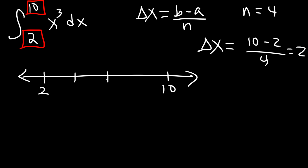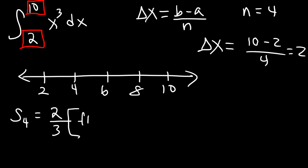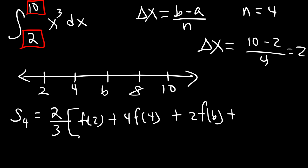Because n is 4, there are four sub-intervals but five points, and delta x is 2. For Simpson's rule and the trapezoidal rule we use all five points. So S sub 4 equals delta x (which is 2) divided by 3, times f(2) plus 4f(4) plus 2f(6) plus 4f(8) plus f(10).